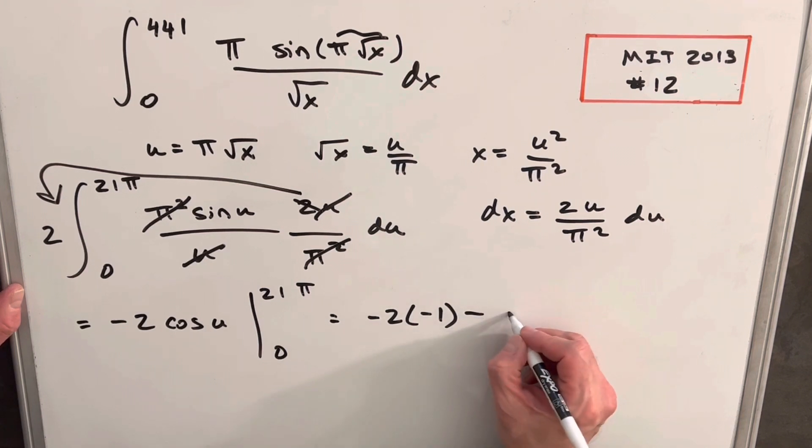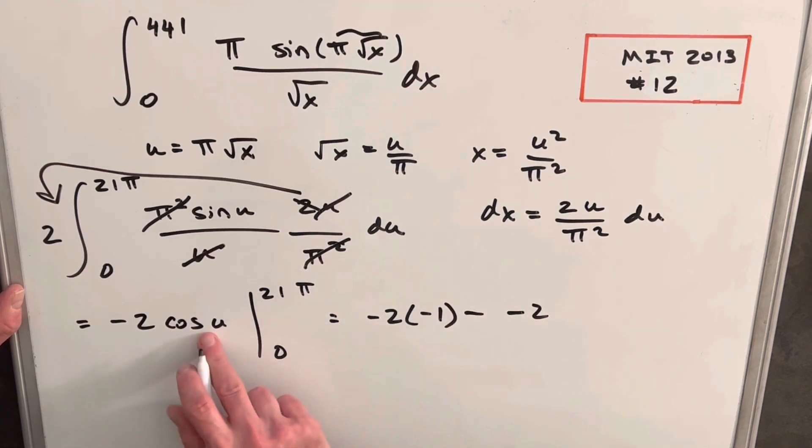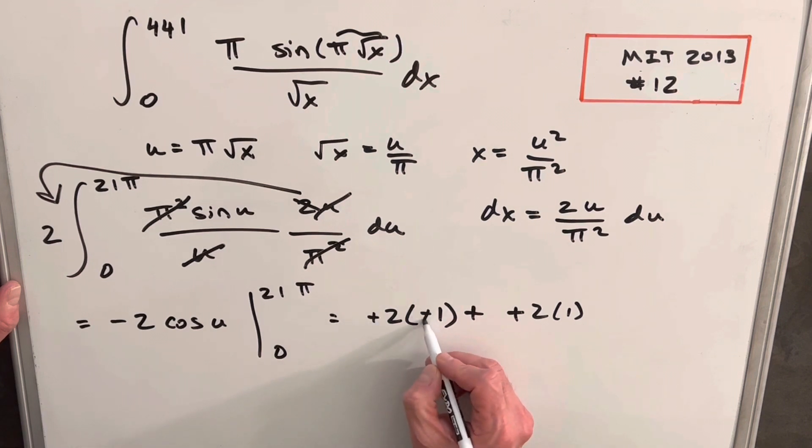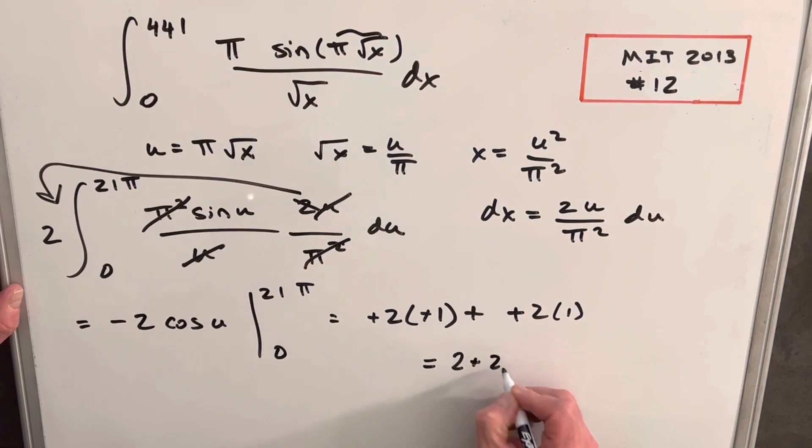And we'll have a minus, a minus 2, cosine of 0 is just 1. So we'll write a 1 in there. But minus times minus is a plus. Minus times minus here is a plus. All we have left is 2 plus 2. I think even I can do that. 2 plus 2 equals 4.